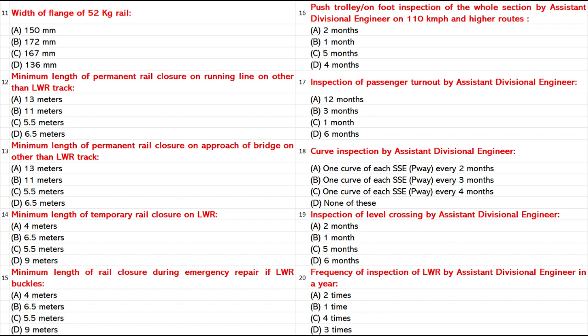Push trolley on foot inspection of the whole section by Assistant Divisional Engineer on 110 km/h and higher routes: A. 2 months. B. 1 month. C. 5 months. D. 4 months. Answer: D. 4 months.